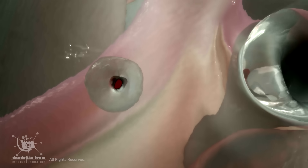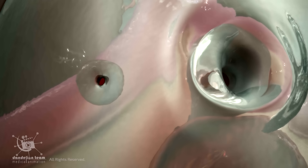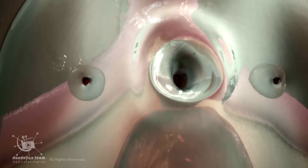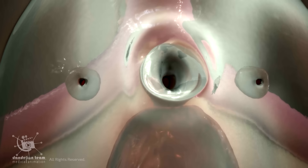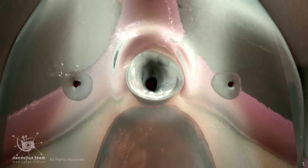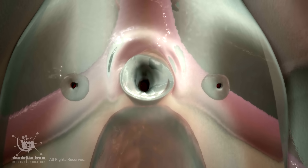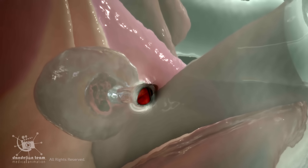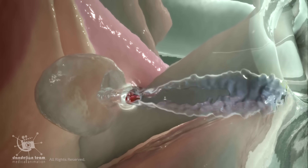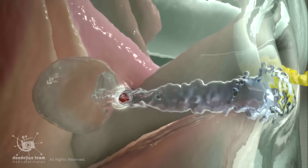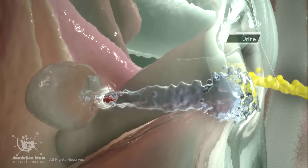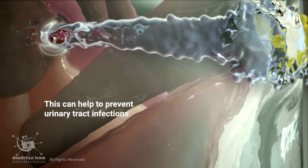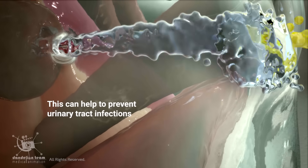The exact function of Skeen's glands is still being researched, but they are believed to play a role in both urinary and sexual health. They may secrete a fluid that helps lubricate the urethra during urination, which can help to prevent urinary tract infections.